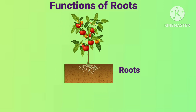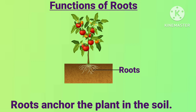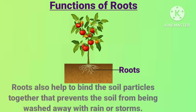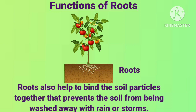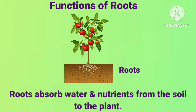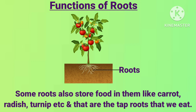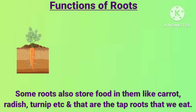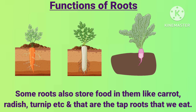The main functions of roots are: roots anchor the plant in the soil, which means roots fix the plant into the soil. The second function is roots also help to bind the soil particles together, which prevents the soil from being washed away with rain or storms. The third function is roots absorb water and nutrients from the soil, and some roots also store food in them, like carrots, radish, turnips — those are the tap roots that we eat.